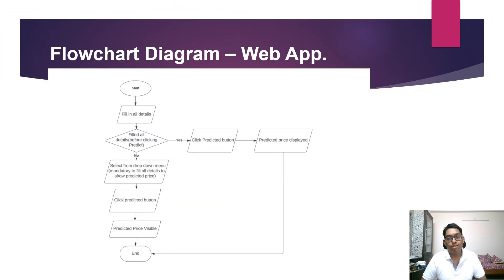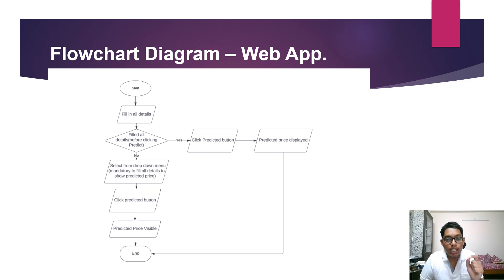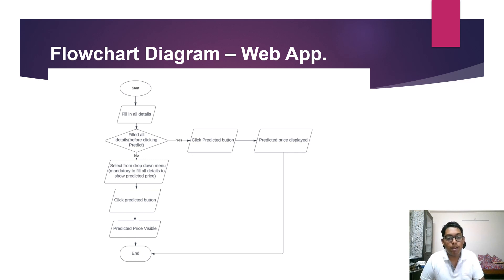This is the flowchart of the web application, showing how this web app works. First, the user fills in all the details. If the details are filled correctly, the user can click the Predict button, and the predicted price will be displayed as the output. If details are filled incorrectly or not filled properly, the user can select from the dropdown menu — it is mandatory to fill all details — then click the button to see the predicted price.